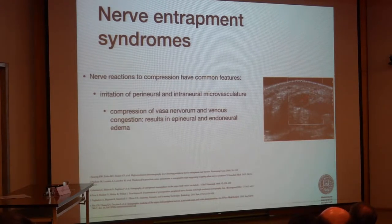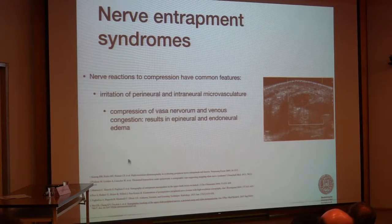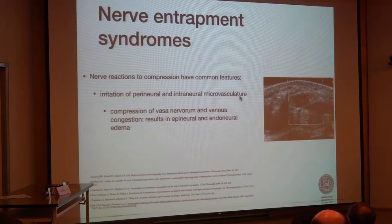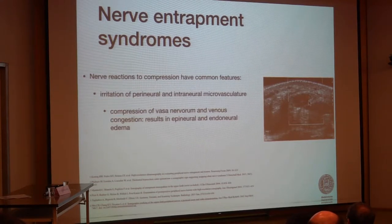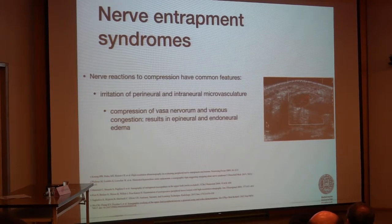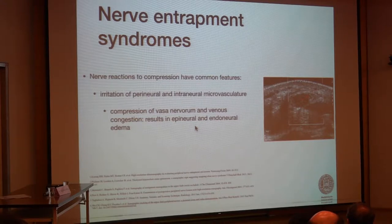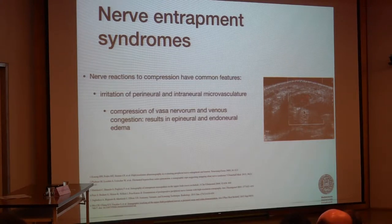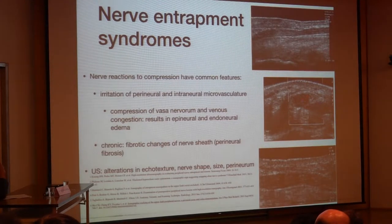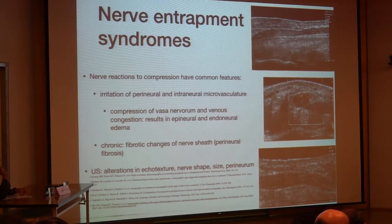Generally, nerve reactions to compression have some common features. There is irritation of the perineurium and intramural vascularity, which can result in hypervascularity, as seen in this median nerve. Compression of the vasa nervorum results in venous congestion, which results in edema that can be seen as loss of echogenicity in the nerve. In chronic stages, there are fibrotic changes in and around the nerve.